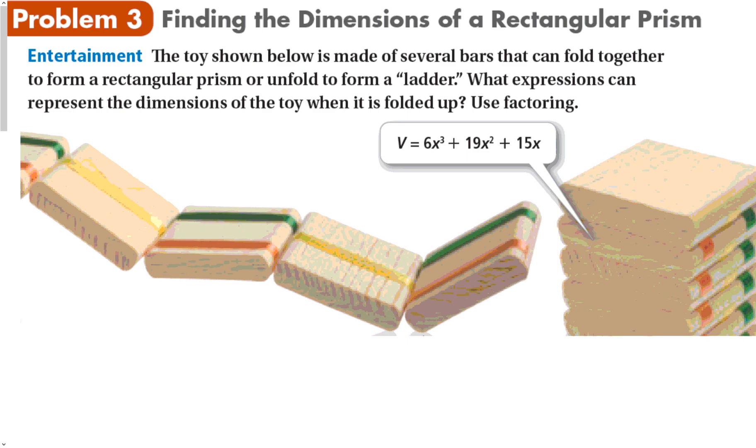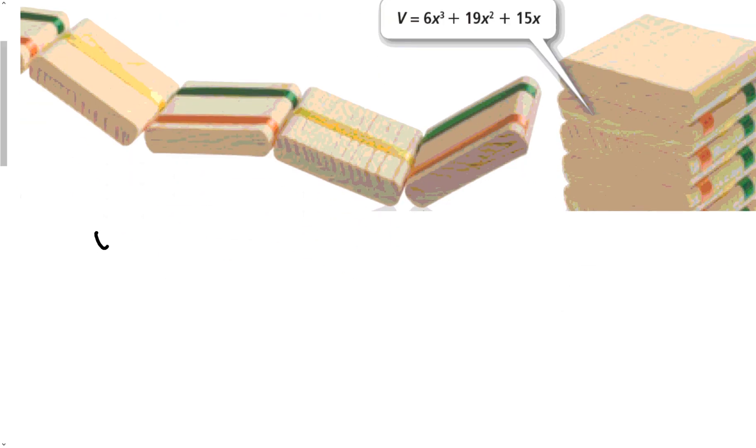You can sometimes factor to find possible expressions for length, width, and height of a rectangular prism. So the toy shown below is made of several ladder bars that can fold together to form a rectangular prism or unfold to form a ladder. What expressions can represent the dimensions of the toy when it's folded up? Use factoring. So this is going to combine finding a common factor and then using a technique like we have done in the past. So the volume is 6x to the third plus 19x squared plus 15x.